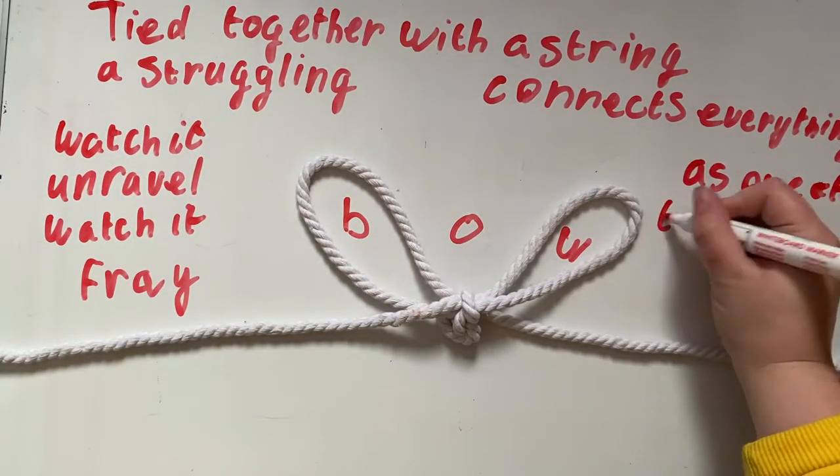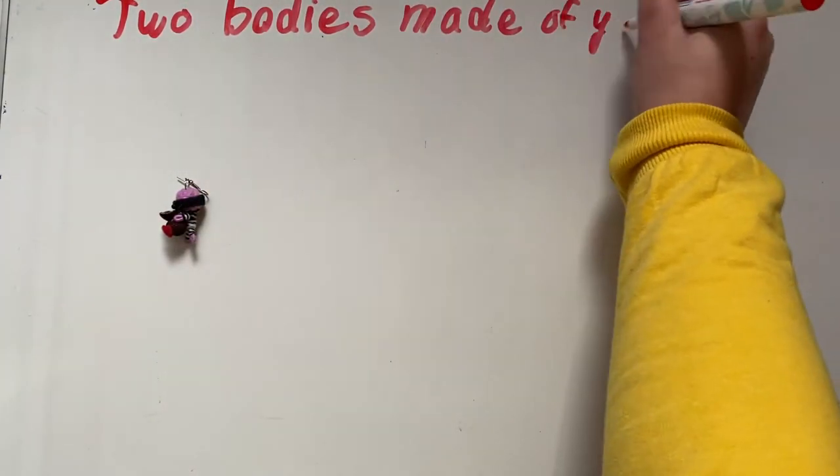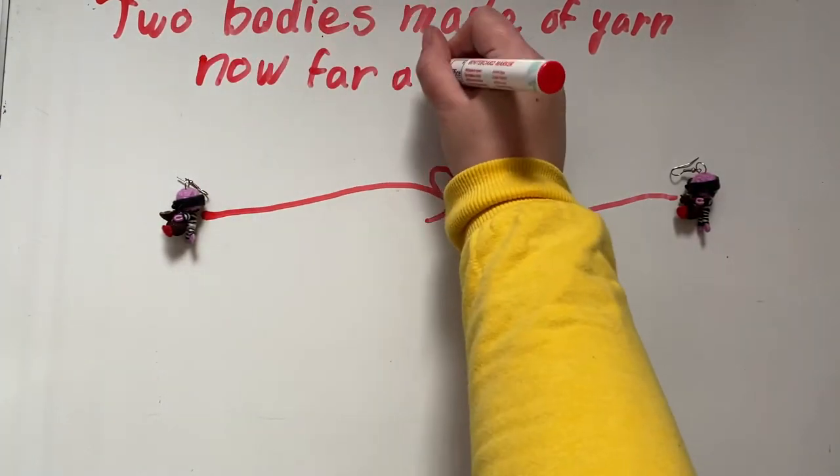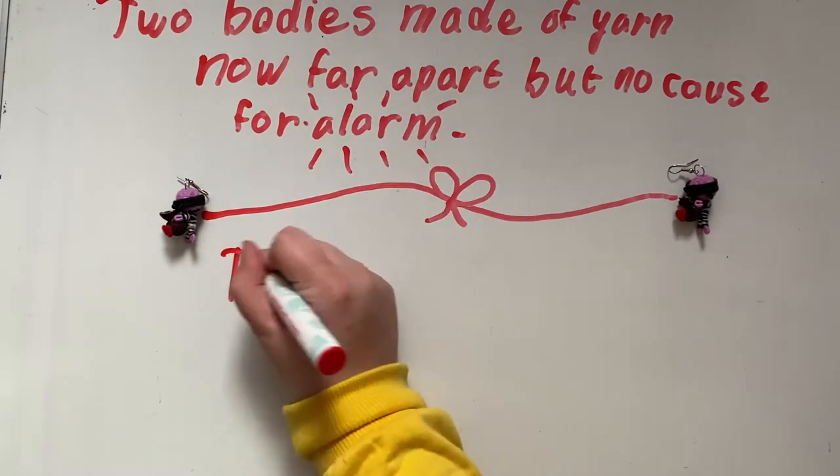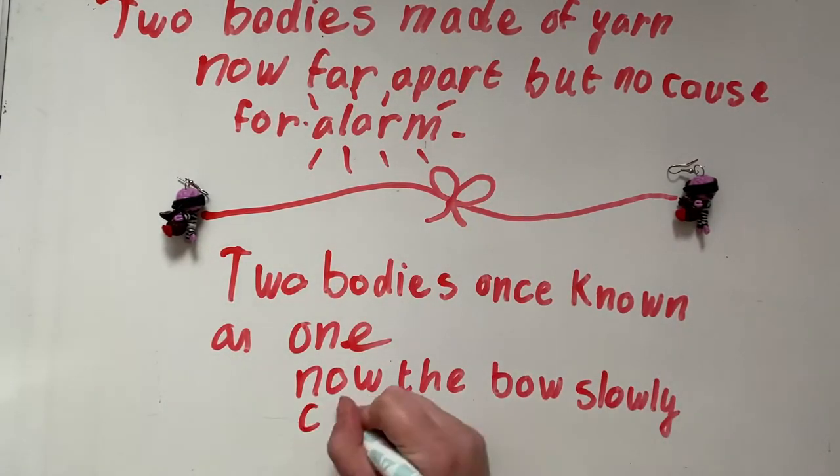Watch it fray as one of the ends gets pulled away. Two bodies made of yarn, now far apart but no cause for alarm. Two bodies once known as one, now the bow slowly comes undone.